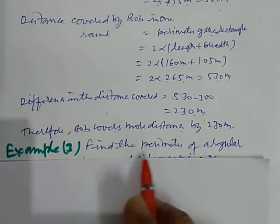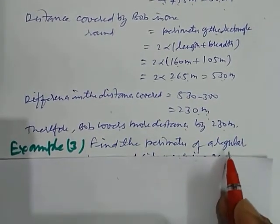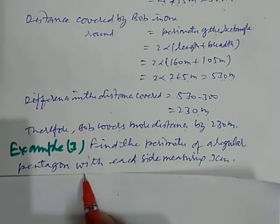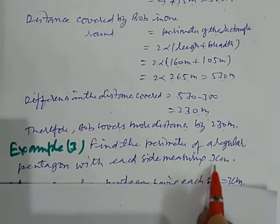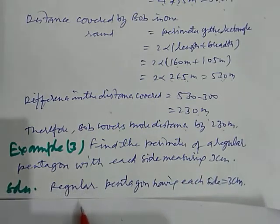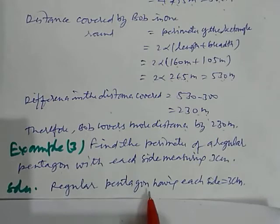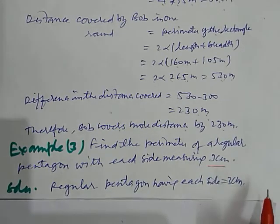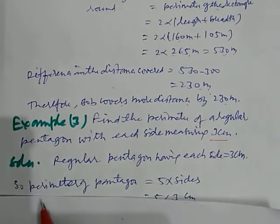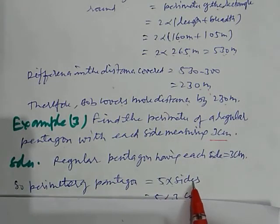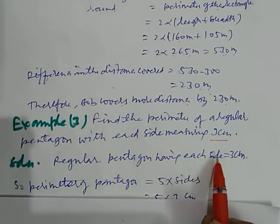Now we take third example. Find the perimeter of a regular pentagon with each side measuring 3 centimeter. So here regular pentagon having each side 3 centimeter which is given to us. Now, the perimeter of pentagon is 5 into sides because all 5 sides are 3 centimeter.